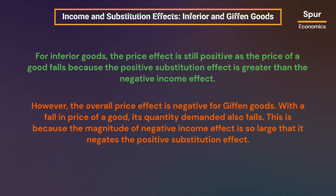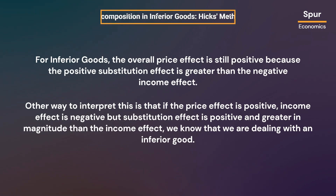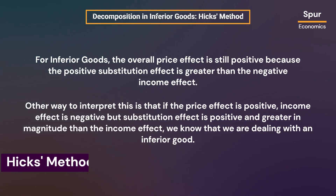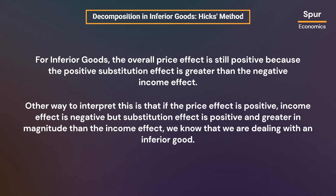For inferior goods, the price effect is still positive as the price of a good falls because the positive substitution effect is greater than the negative income effect. However, the overall price effect is negative for Giffen goods — with a fall in price, quantity demanded also falls. This is because the magnitude of the negative income effect is so large that it negates the positive substitution effect. If the price effect is positive, income effect is negative, but substitution effect is positive and greater in magnitude than the income effect, we know we are dealing with an inferior good.